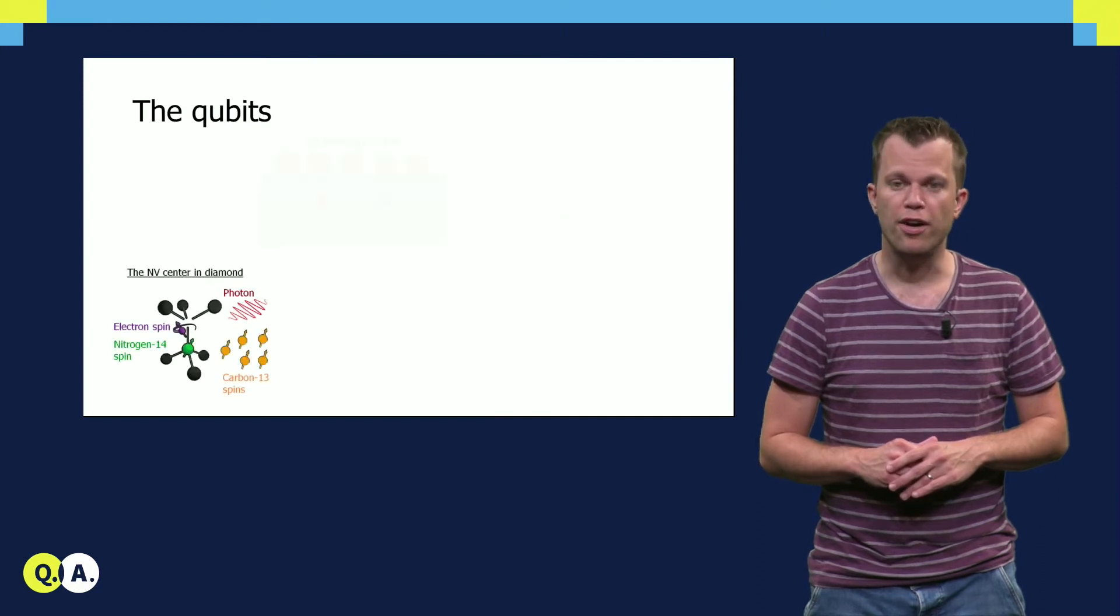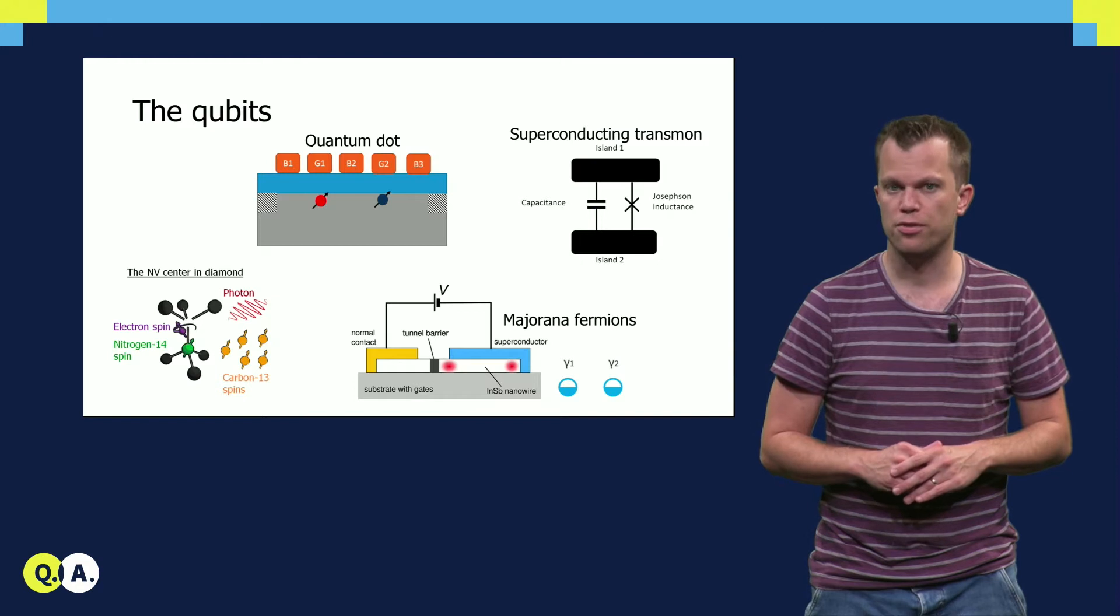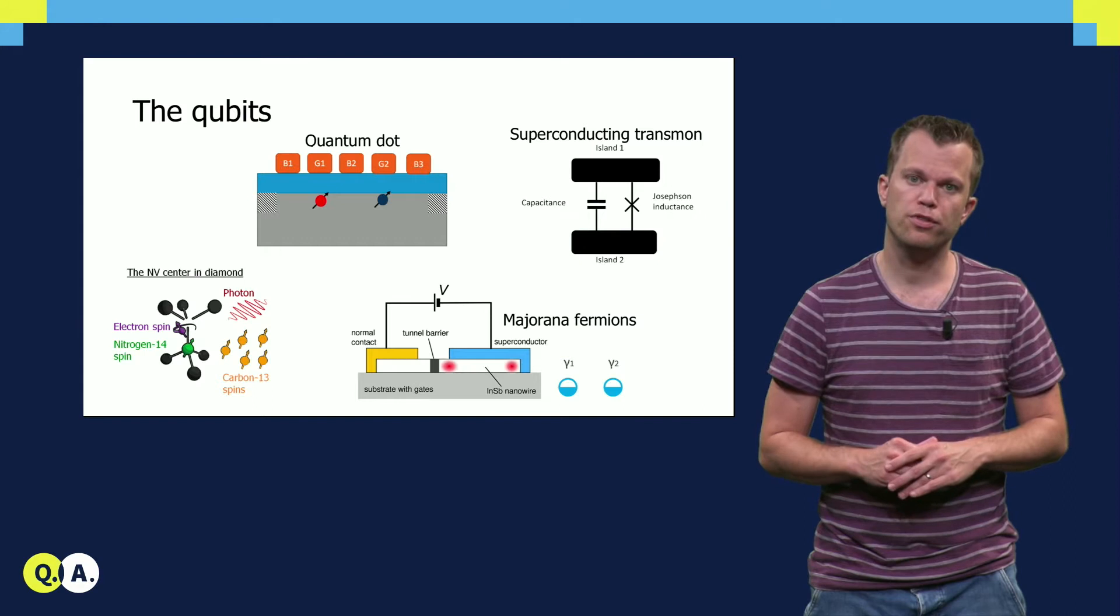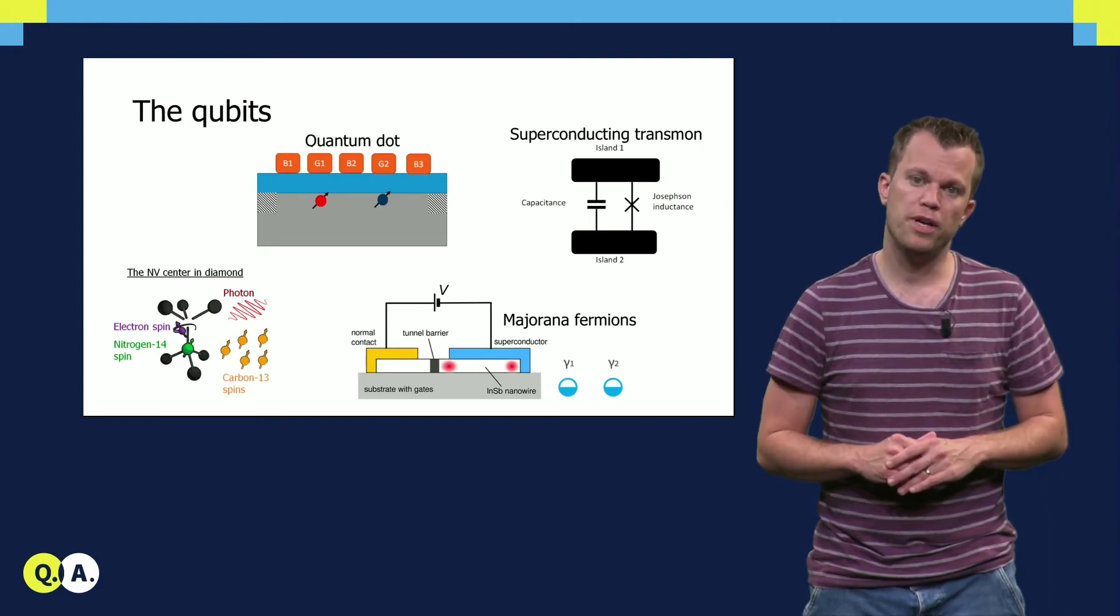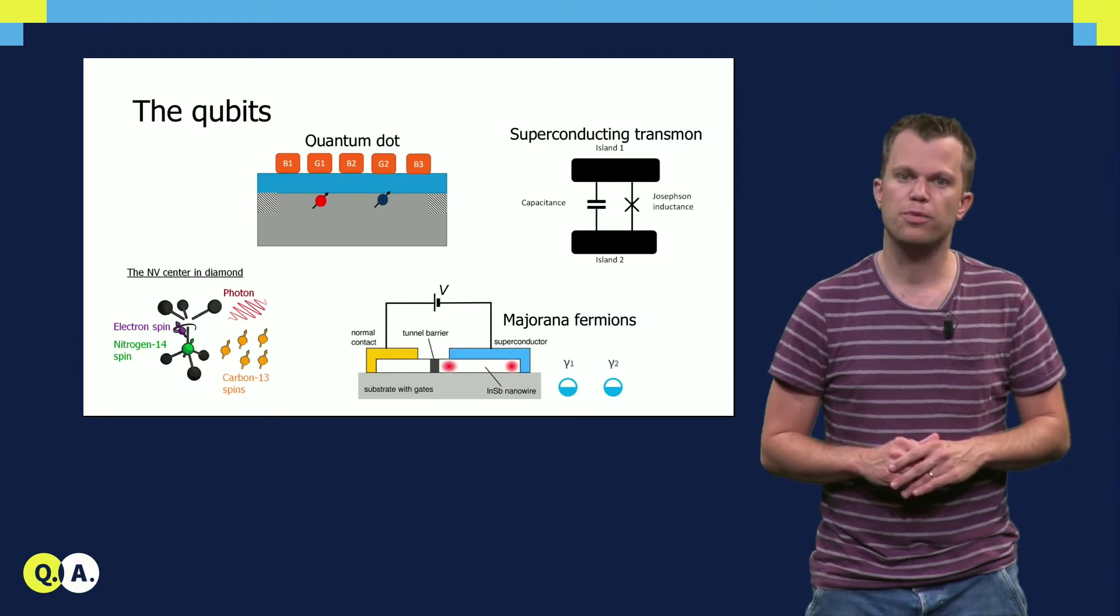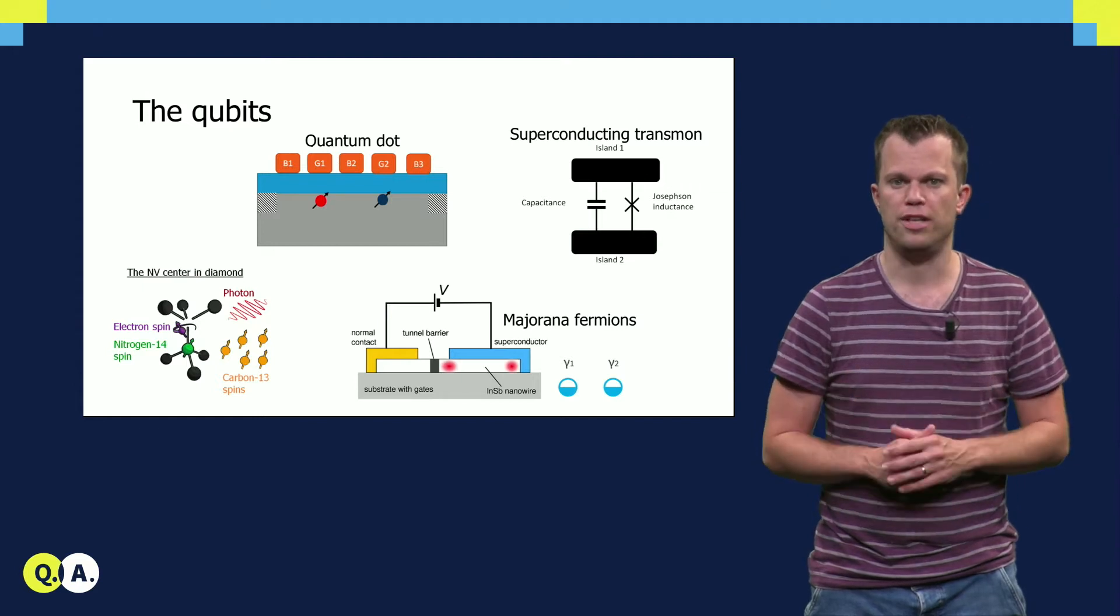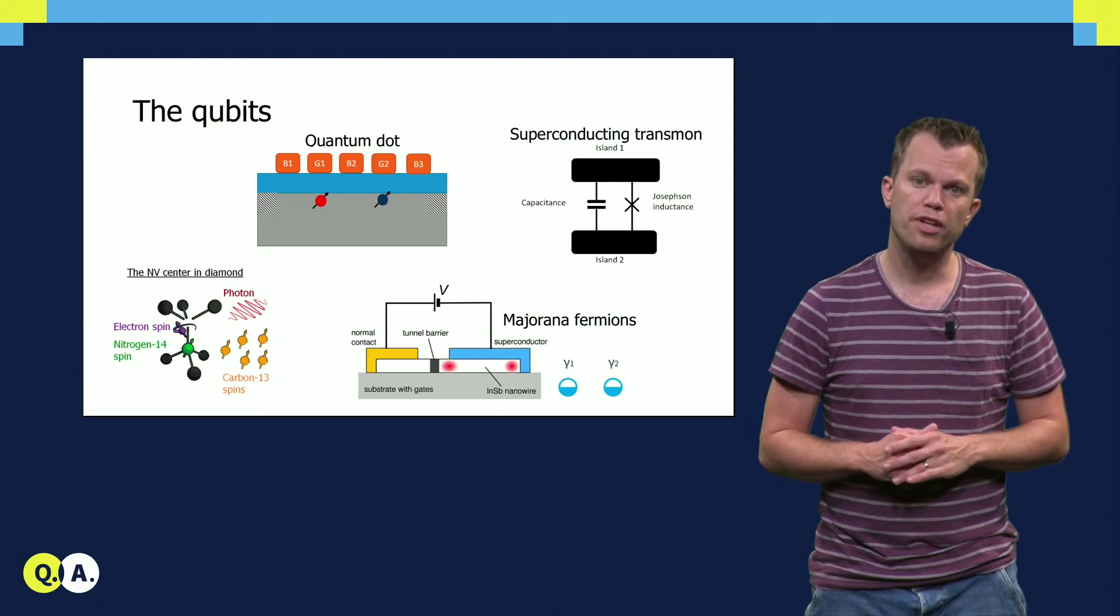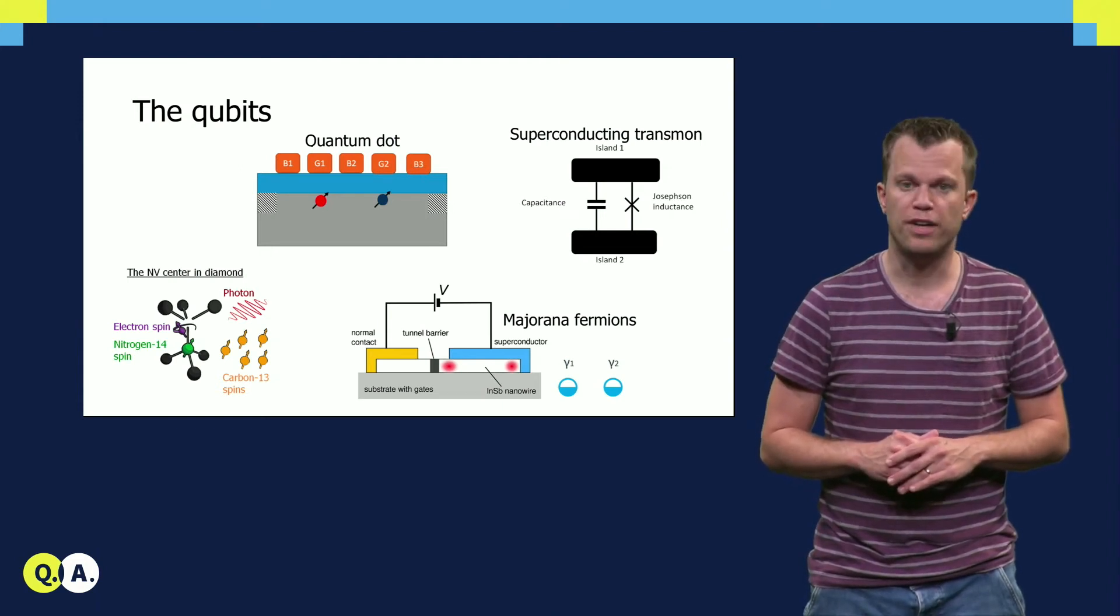Today various qubits are being explored and investigated to reach this goal. In this series of lectures we have introduced to you several of the most promising qubit systems. Qubits based on the spin states of electrons or nuclei associated with defects or donors in silicon or diamond can reach very long coherence times.